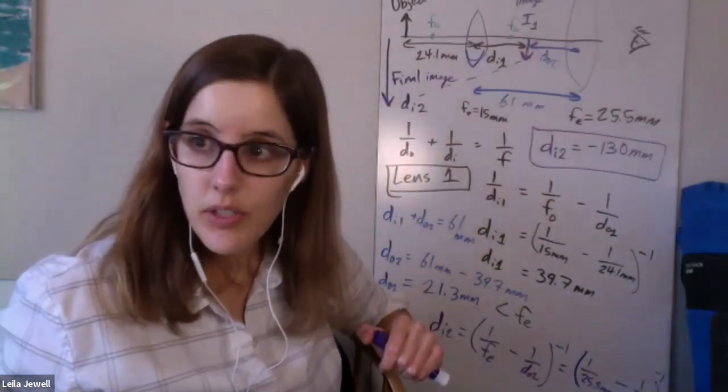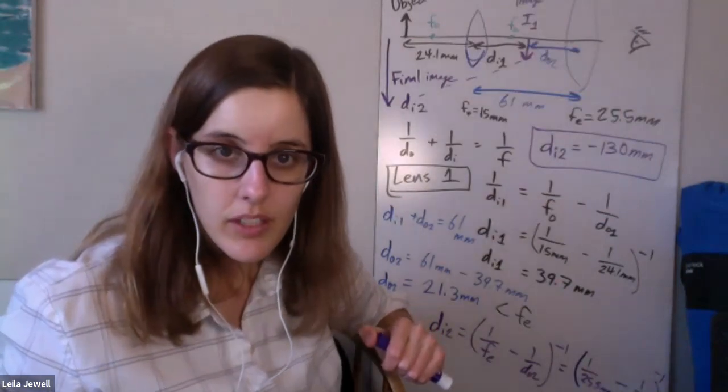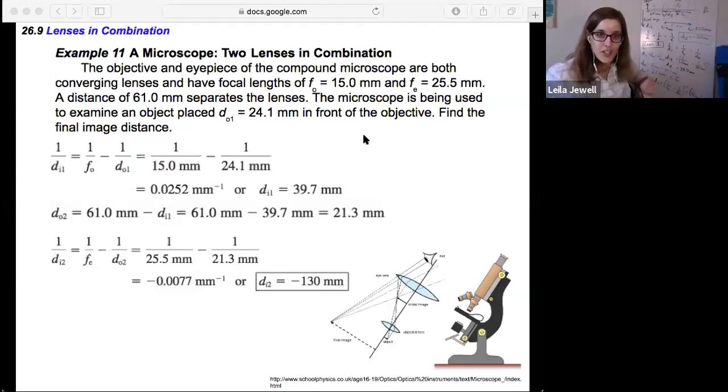So I'll share the screen so you can see the neater writing of the solutions. So here's our final slide that shows all the steps as mentioned, and that the final image distance is indeed negative 130 millimeters. So there we have it. Lenses in combination. Just a one-two punch. Take it one step at a time, and you will get there.